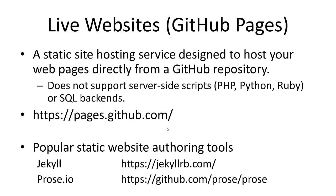Live websites is another important new application for GitHub, called GitHub Pages. A static site can be hosted on GitHub — no active backend scripts, no PHP, no Python, no Ruby, no SQL backend. But you can host HTML and CSS code on GitHub, served and updated directly from GitHub. Popular static web authoring tools like Jekyll and Prose.io support authoring rich websites directly on GitHub using GitHub Pages. You can read more at pages.github.com.